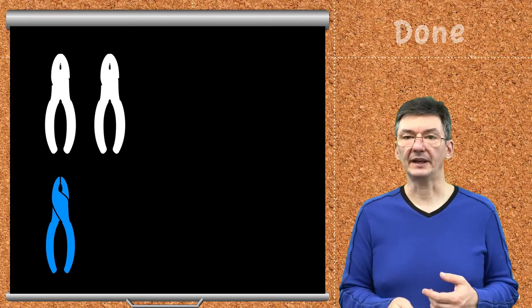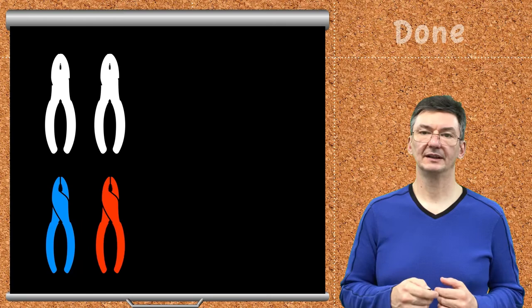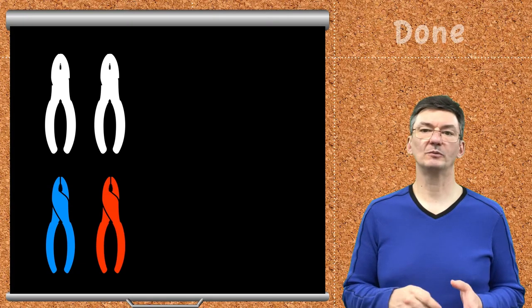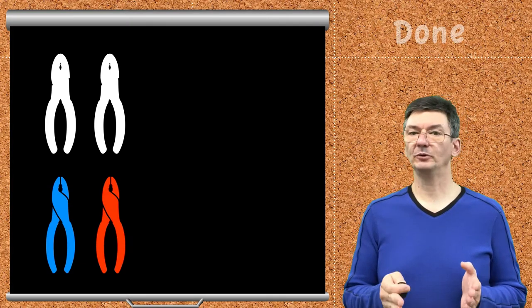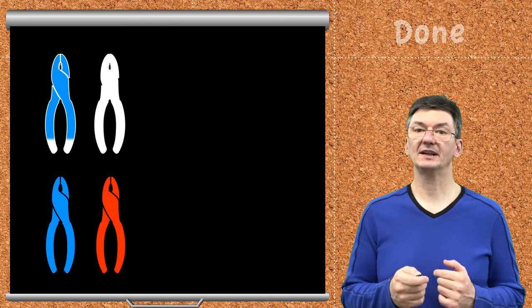And it potentially leads us to the problem. Is there any other way? Yes, there is. Instead of words, we can use colors. The red pliers are red from all sides. And the blue pliers are blue from all sides. What about the pliers place? Then we use the colors too.